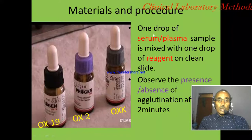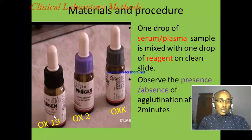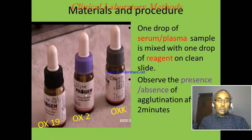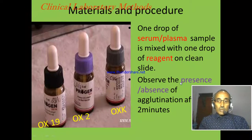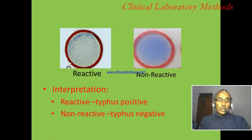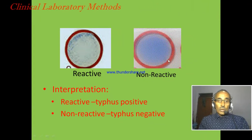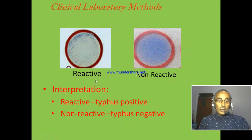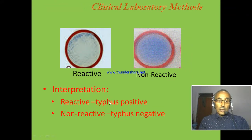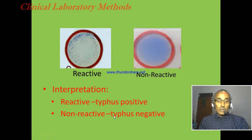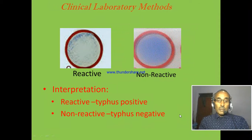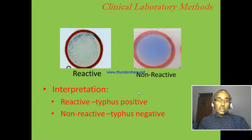Materials for the Weil-Felix test include OX19, OX2, and OXK reagents prepared from Proteus bacteria. In the procedure, serum or plasma is mixed with the reagent in the laboratory, and the presence or absence of agglutination is observed after two minutes. If there is reaction, the result is reported as reactive; if there is no reaction, it is reported as non-reactive, most probably indicating typhus negative.